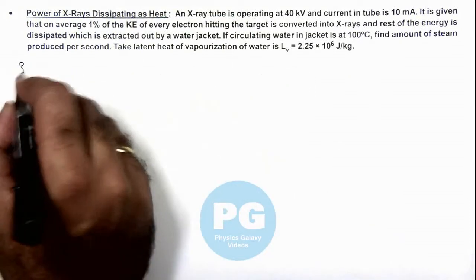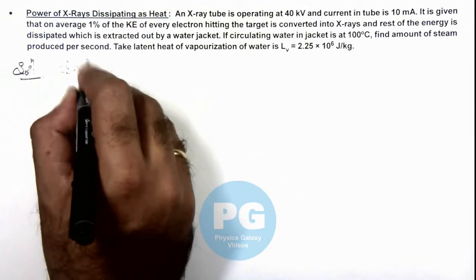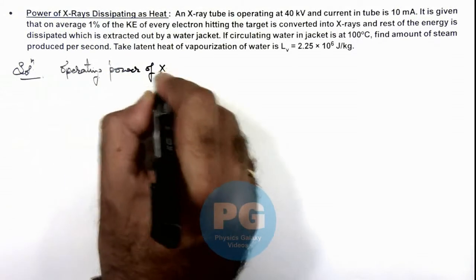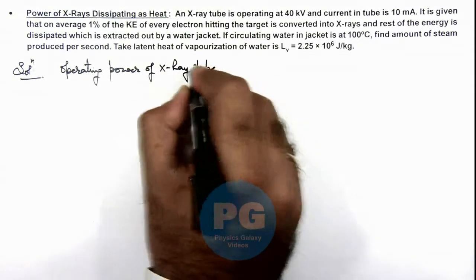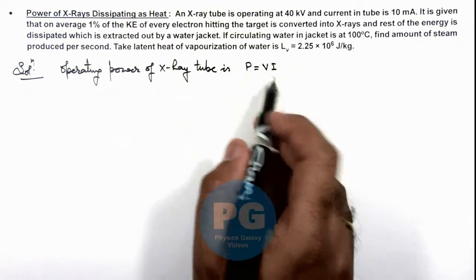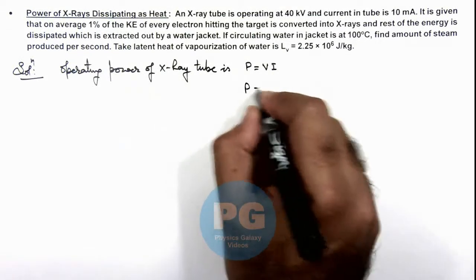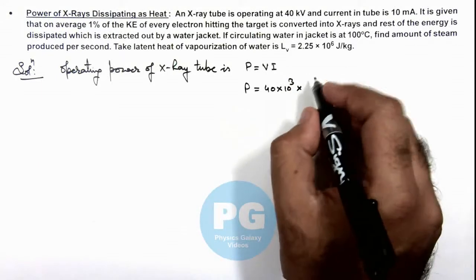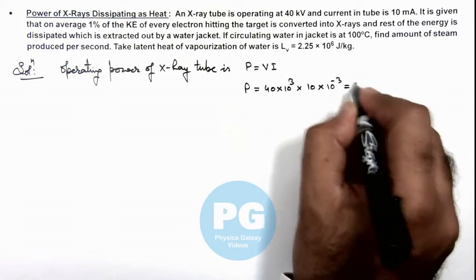Here in solution first, we can calculate the operating power of X-ray tube. This can be given as P is equal to VI, the product of voltage across it and the operating current. Numerically when we calculate this, 40 into 10 to power 3 multiplied by the current here is 10 multiplied by 10 to power minus 3, which is 400 watts.